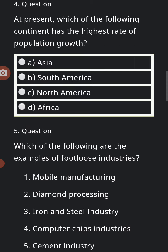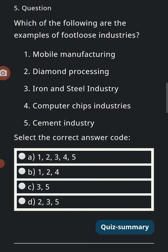The last question is: which of the following are examples of footloose industries? Mobile manufacturing, diamond processing, iron and steel industries, computer chip industries, and cement industry. Choose the correct answer code. That's it.